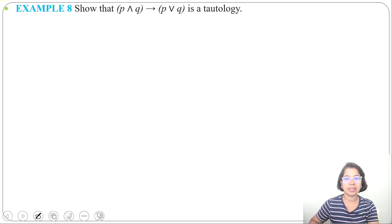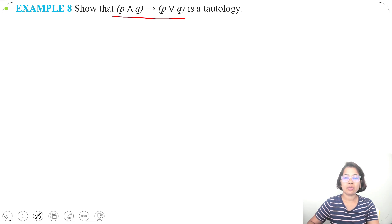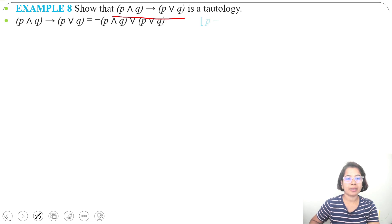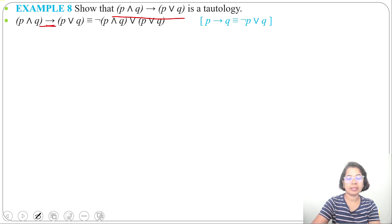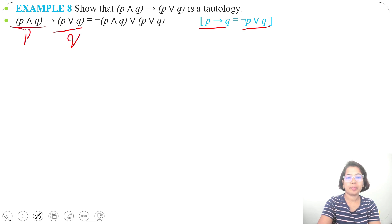Let's see another example. Here we'll prove that a compound proposition is a tautology. For proving a tautology, we can create a truth table — if all values are true, it's a tautology — but we can also prove it without creating a truth table. The proposition is: (p and q) implies (p or q). This implication can be written as negation of (p and q) or (p or q), using the equivalence (p implies q) equals (negation p or q).